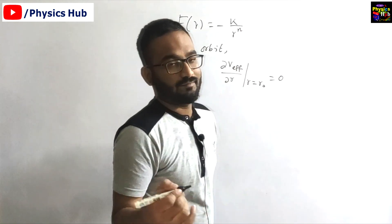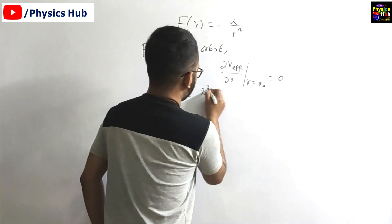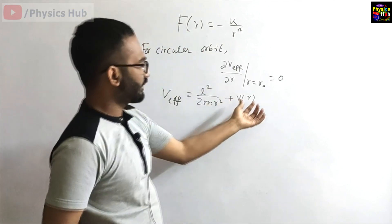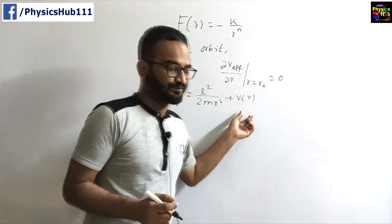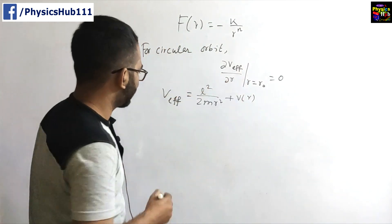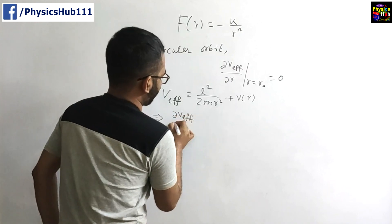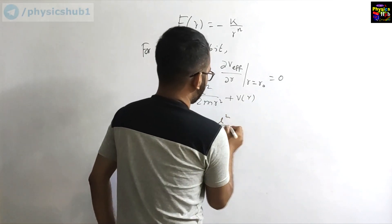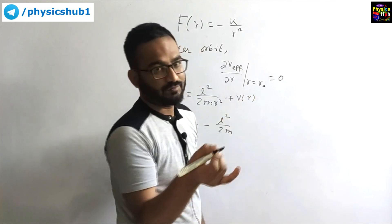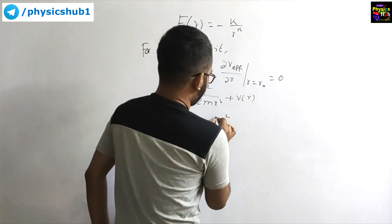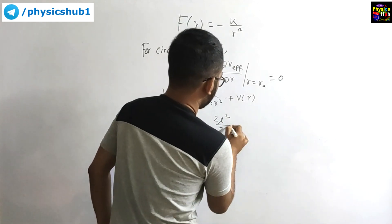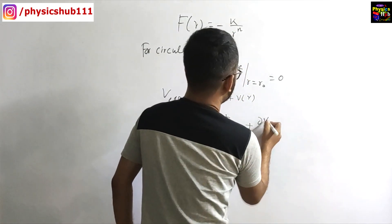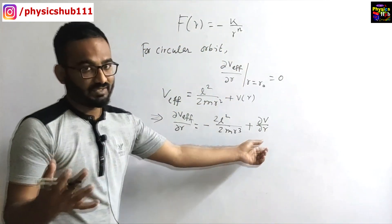What is V_eff? V_eff equals L² / (2mr²) + V(r). Now you are given force, but in this expression you have potential, and the condition is dV_eff/dr = 0. So we take the derivative with respect to r. dV_eff/dr becomes -L² / (mr³) + dV/dr, and dV/dr equals -f(r).